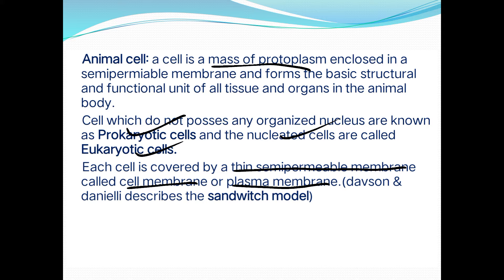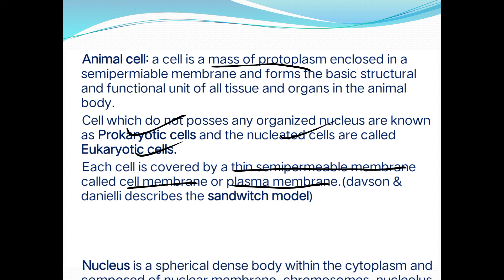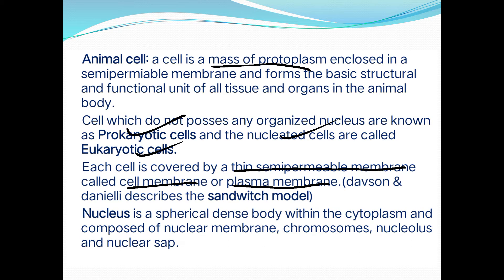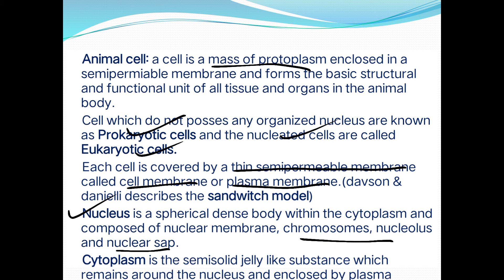The nucleus is a spherical dense body within the cytoplasm of the cell, composed of nuclear membrane, chromosomes, nucleolus, and nuclear sap. The cytoplasm is a semi-solid jelly-like substance which remains around the nucleus and is enclosed by the plasma membrane.